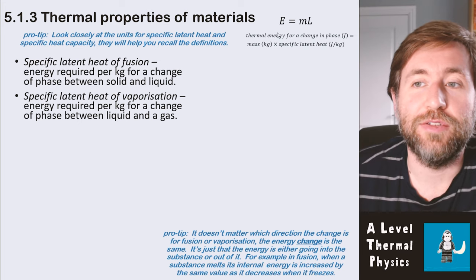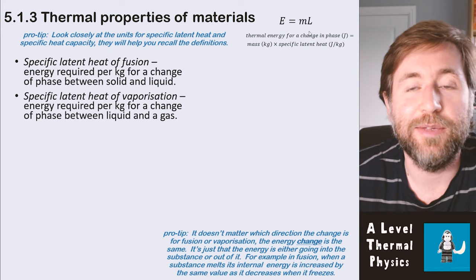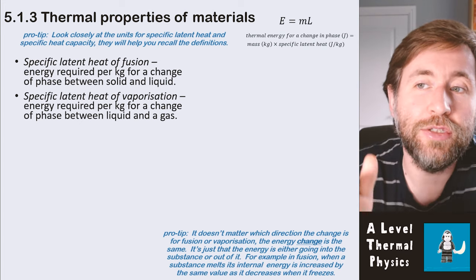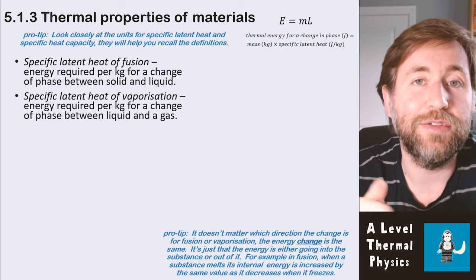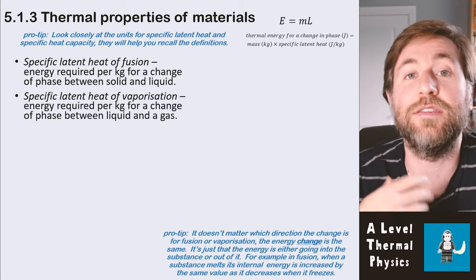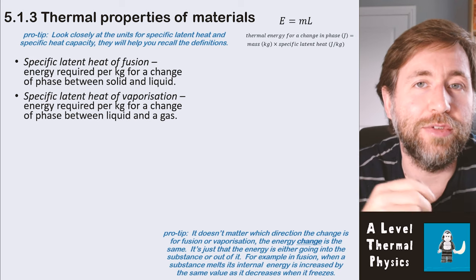The equation for energy for a change in phase is E equals ML, so mass times specific latent heat. Now my pro tip here for this and the previous equation is that actually the units of specific latent heat and the units of specific heat capacity can tell you exactly what they mean. That's a really important idea in physics: the idea that the units tell us the dimensions, that tell us really what the definition of that quantity is.